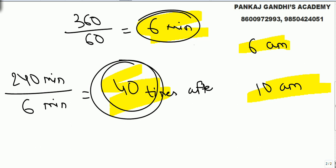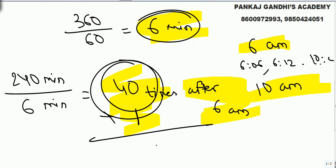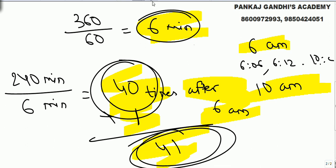This is after 6 am, 40 times. Look, these are 40 times after 6, means this is 6, 6, 6, 6, 12 going on till 10 o'clock. 40 times after 6 o'clock, so including 6 o'clock we have to take - including 6 o'clock, answer has to be 41 times.